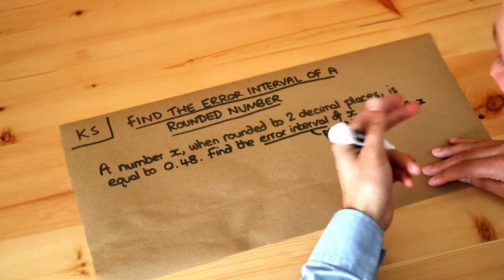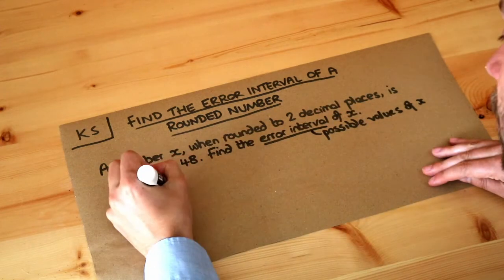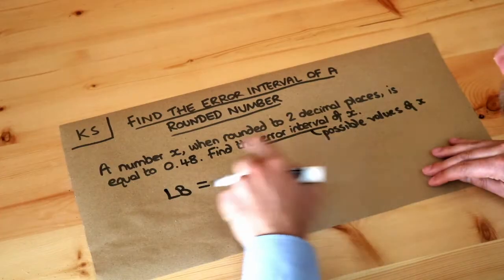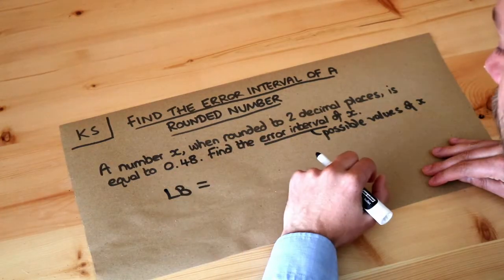Now in previous videos we looked at the lower bound and the upper bound of a number. So the lower bound is the smallest value that x could have been before it was rounded to 0.48.